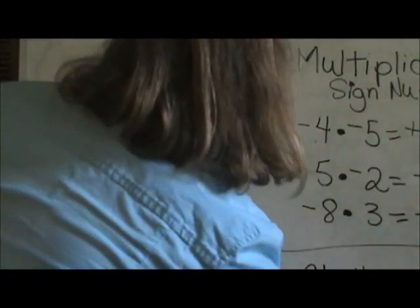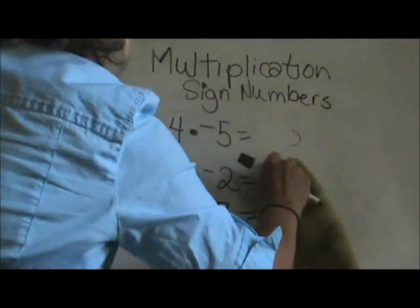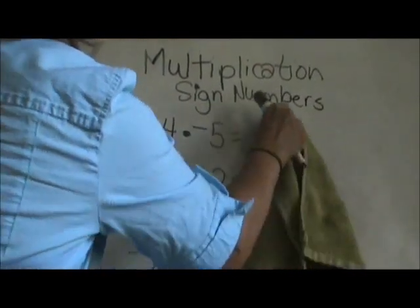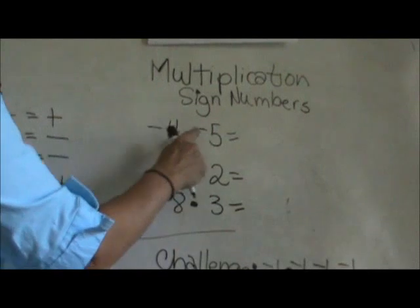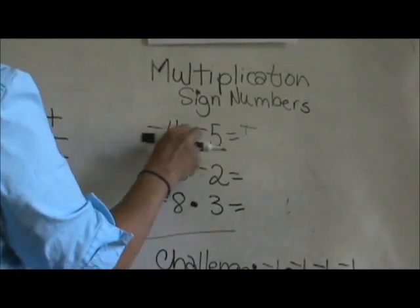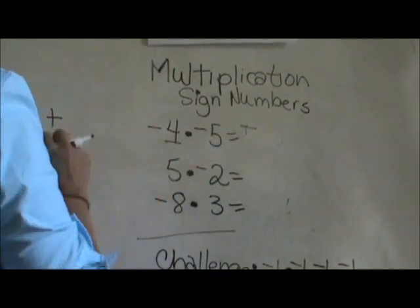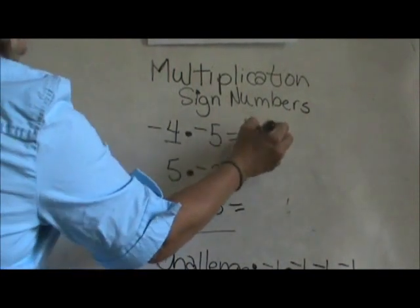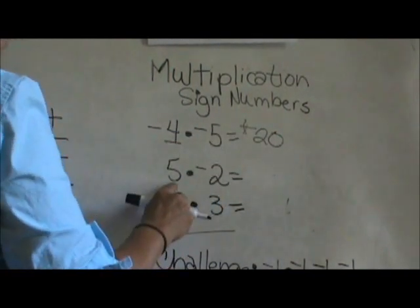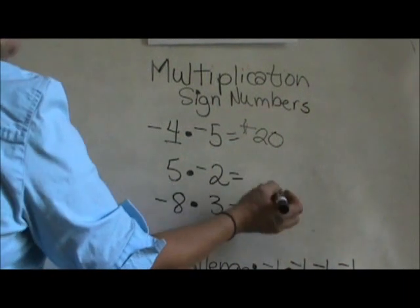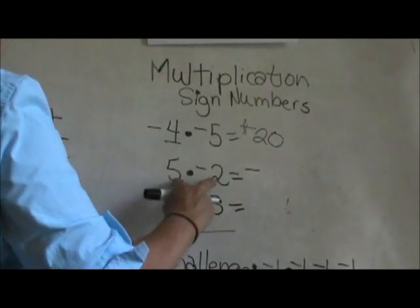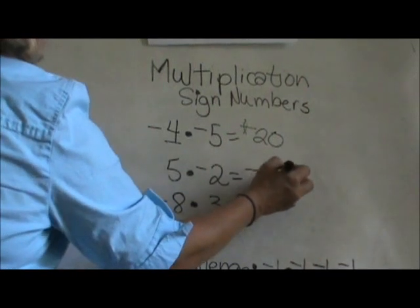Let's go back and look at our three examples and then we're going to try a challenge problem. The rule is a negative times a negative is equal to a positive — they've paired up and become positive. So it's 4 times 5, which is just 20. Positive times a negative: we need a pair, so the answer's got to be negative.